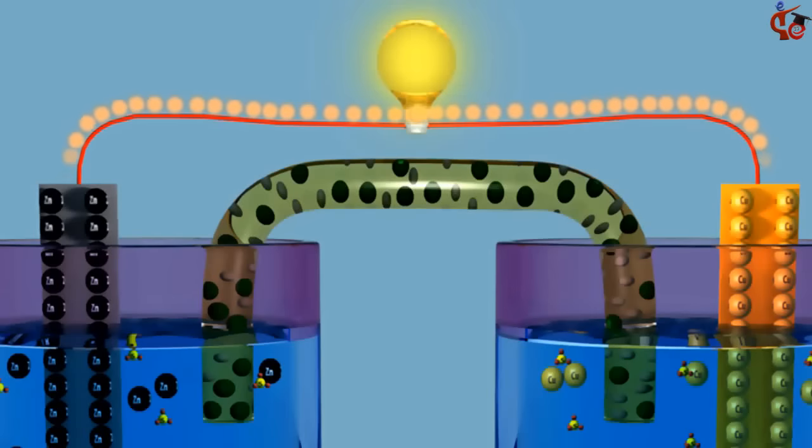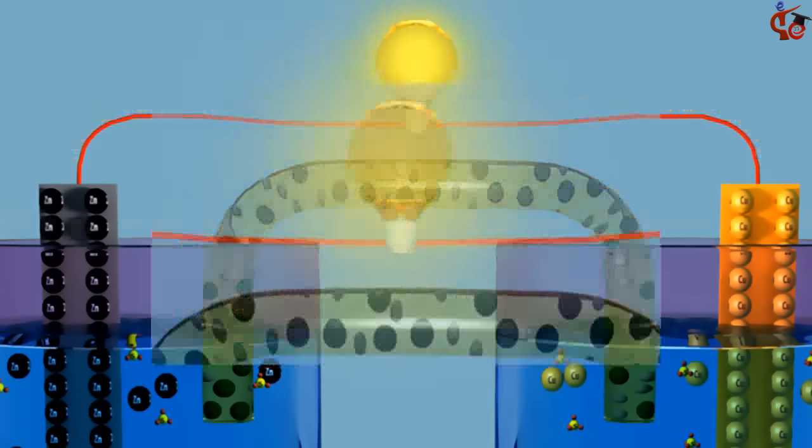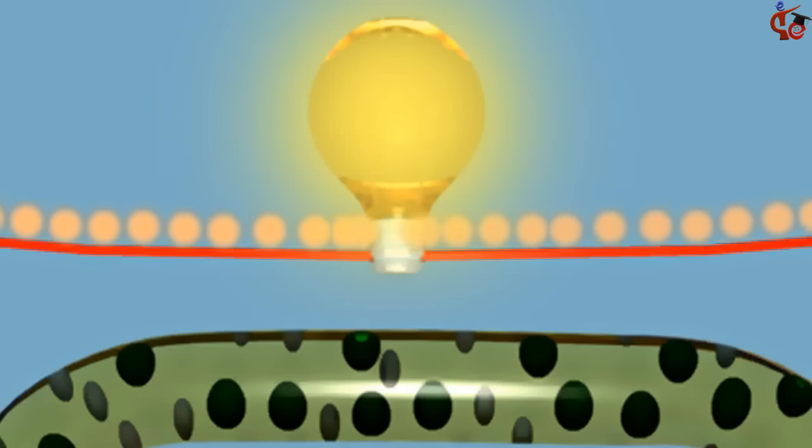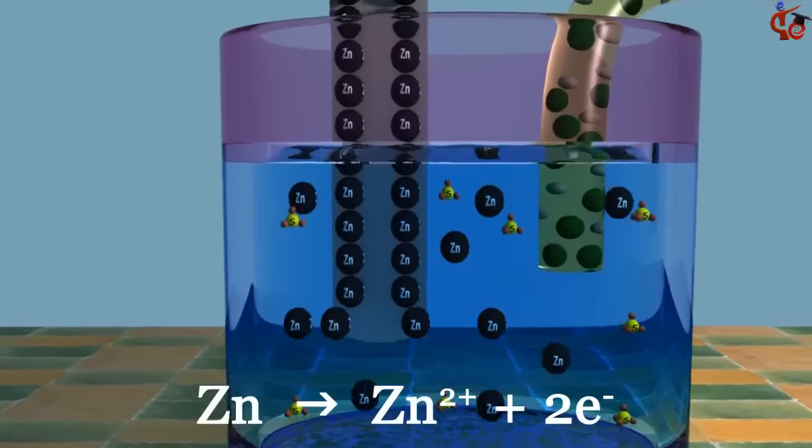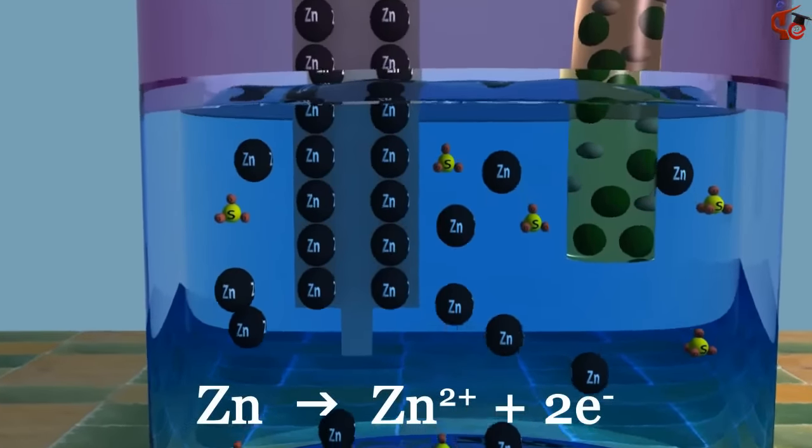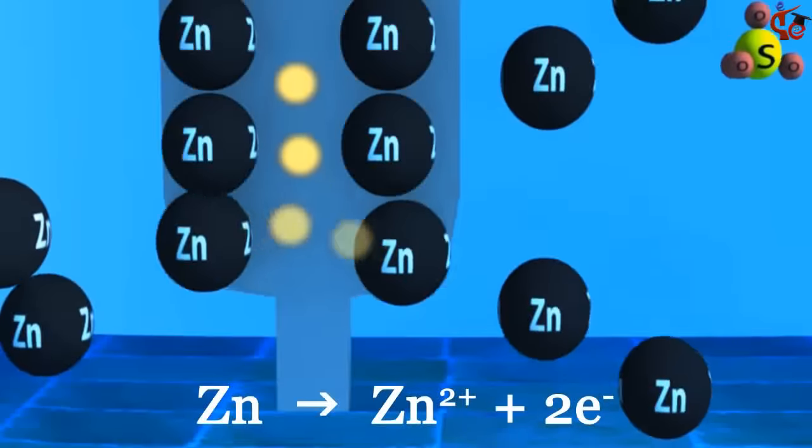Attaching a cell shows that electrons flow from zinc to copper. Because zinc is a more active metal than copper, it is more likely to lose electrons.